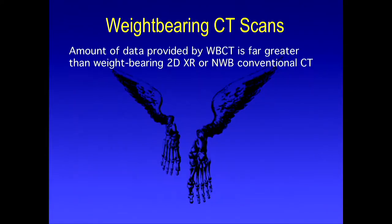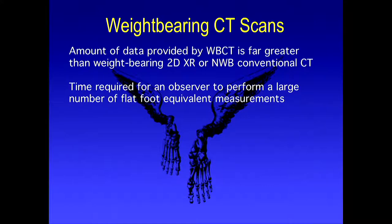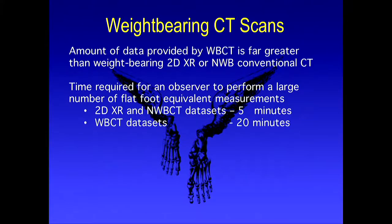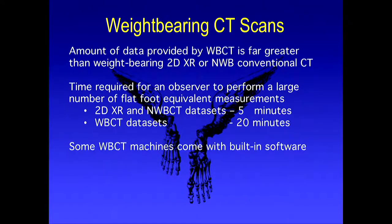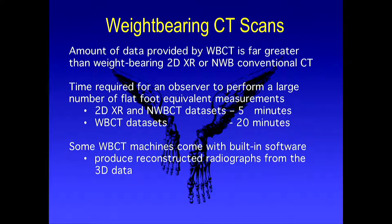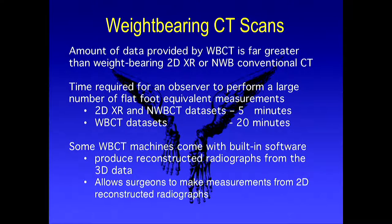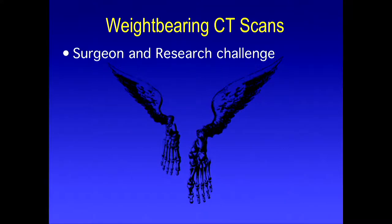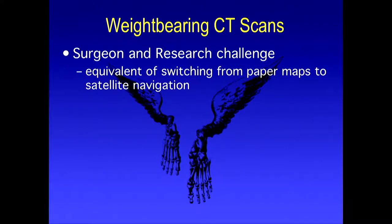The setup fits in a very small room. The amount of data is huge — much greater than a 2D scan. A 2D measurement takes about five minutes, but weight-bearing CT can take up to 20 minutes to interpret — time we usually don't have. Some machines are coming with built-in software to help reproduce this data and obtain the measurements we need. You can also extract 2D radiographs by taking selective cuts, so some practitioners do these scans on everybody since the radiation dose is roughly equivalent — though the extracted 2D images aren't quite as good.